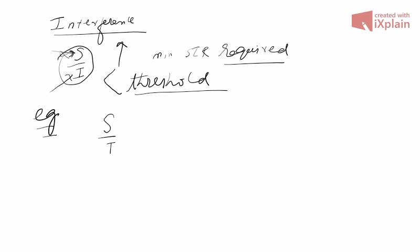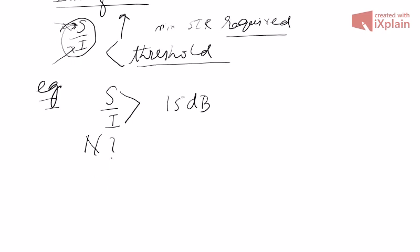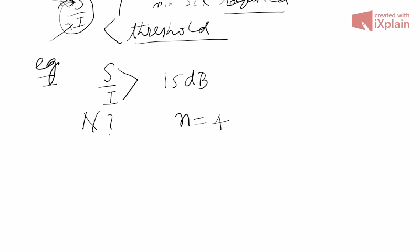If the S/I ratio required is 15 dB for satisfactory forward channel performance of a cellular system, we need to determine the frequency reuse factor N and the cluster size for maximum capacity. We are given that the path loss exponent is 4, and that there are six co-channel cells — that is, six cells which have the same frequency, as in the previous example.